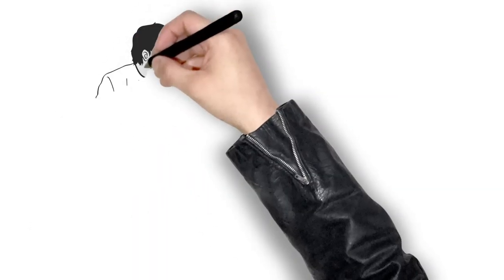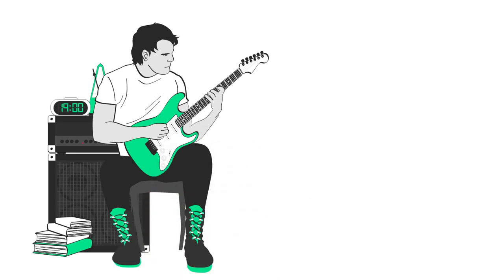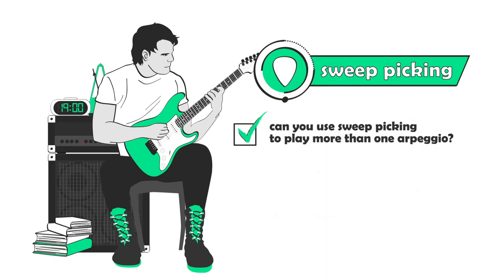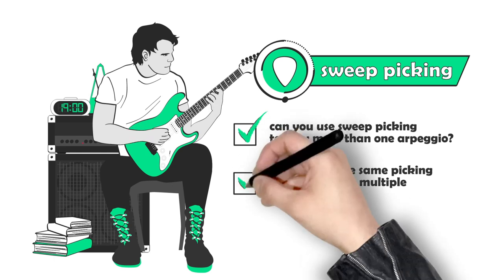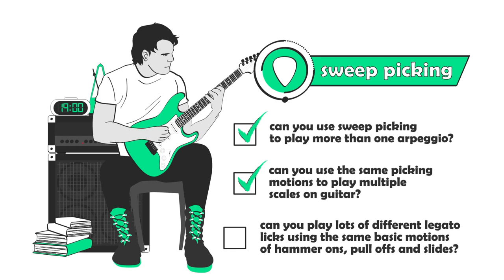And here's the thing, you often use one type of motion to play lots and lots of different notes. Think of sweep picking, for example. Can you use sweep picking to play more than one arpeggio? Yes, of course. And can you use the same picking motions to play multiple scales or scale sequences on guitar? Yes, of course. And can you play different legato licks using the same basic motions of hammer-ons, pull-offs, and slides? Of course, the answer is yes.